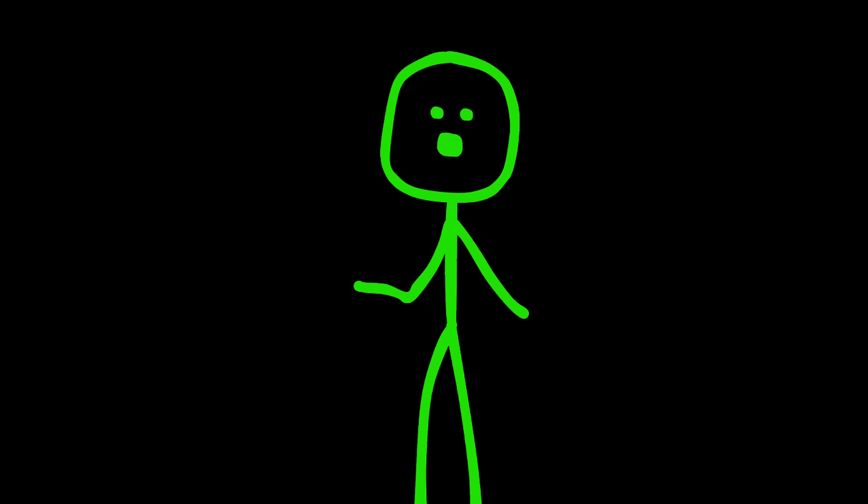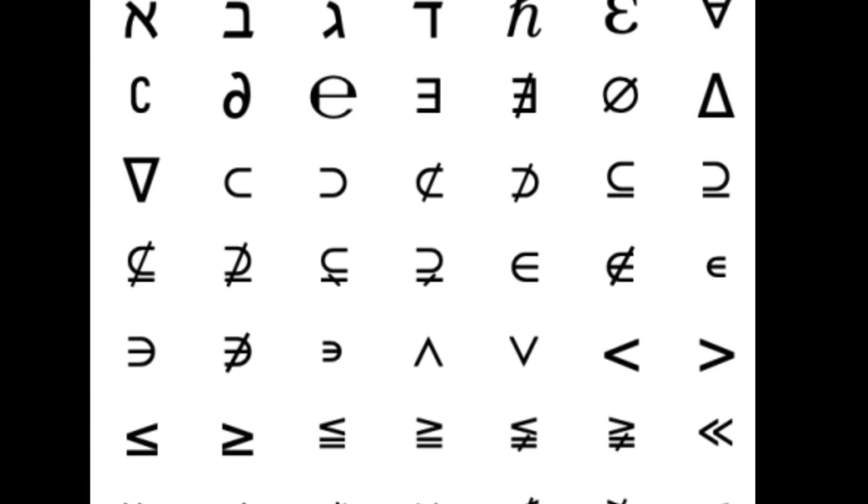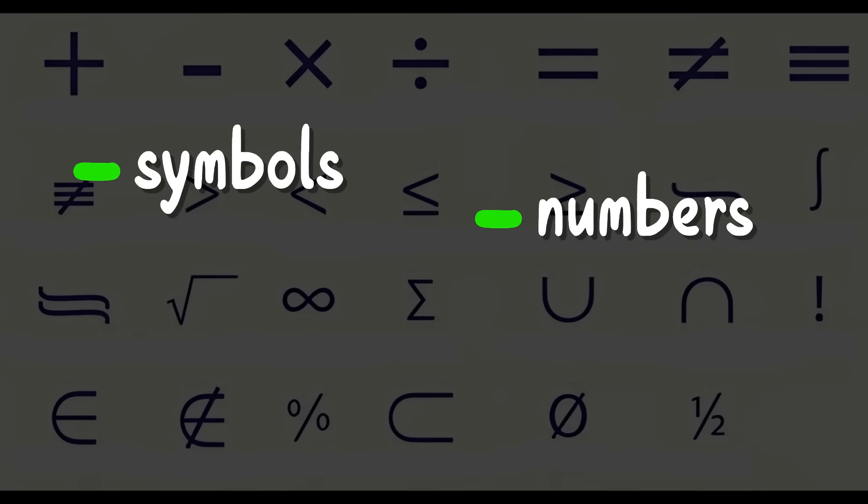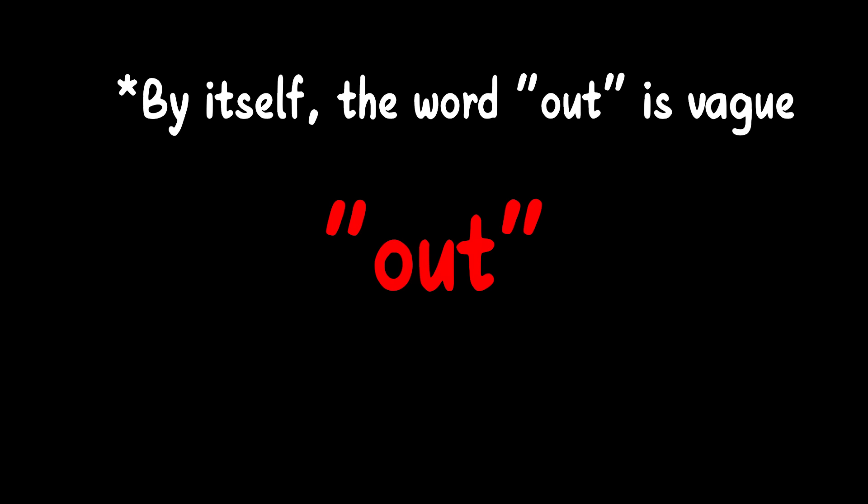The good news? Learning this language is way easier than it looks. But here's the really important part. Math symbols never work in isolation. They only make sense when combined with other symbols, numbers, or variables. It's just like with spoken language. Knowing the meaning of a single word isn't enough. You also need to know how to use it in a full sentence.